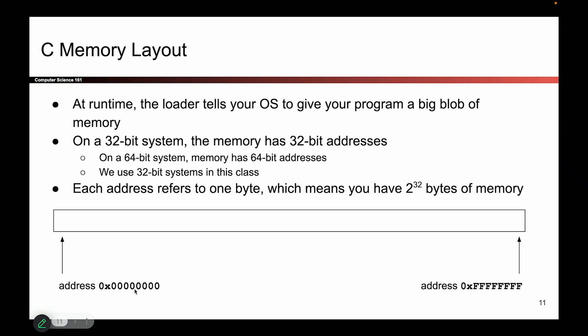Each one of these bits can be a 1 or a 0, so I have in total 2 to the 32 possibilities of addresses. That means there are 2 to the 32 bytes going from all zeros to all ones. It's just a big array of bytes.